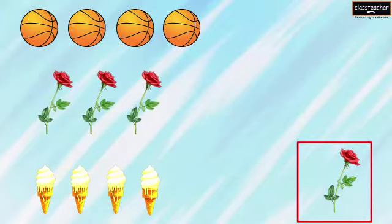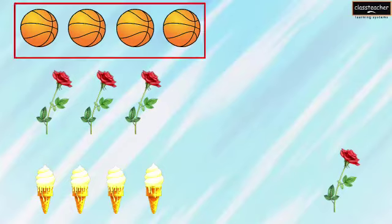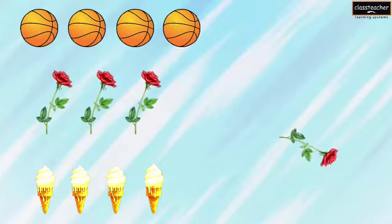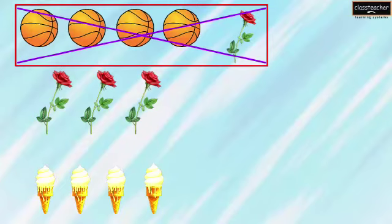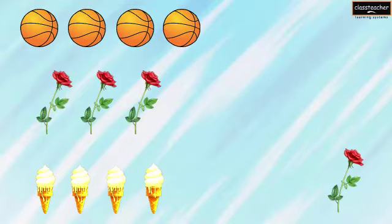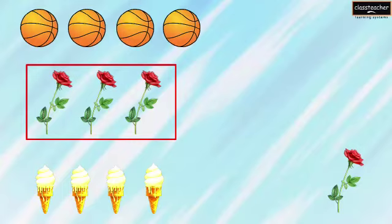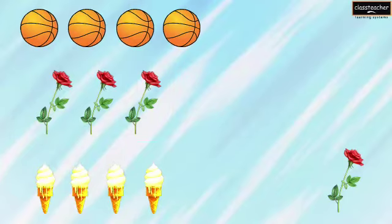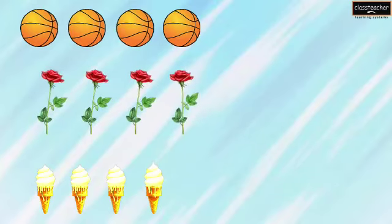Let us look at the third object, which is a flower. In which of these groups should we place it? Let us look at the first group — it is a group of balls. A flower is different from a ball, so the third object, which is a flower, does not belong to the group of balls. Let us look at the second group. It is a group of flowers. Because there are all flowers in this group, the third object, which is a flower, will belong with the other flowers in the group.